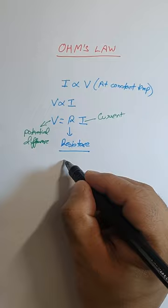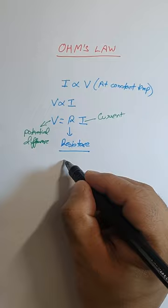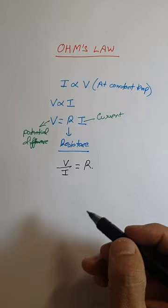This equation V equals RI can also be written in the form V by I equals R. Also, we can write I equals V by R. So we see that current is directly proportional to the potential difference and also current is inversely proportional to the resistance.